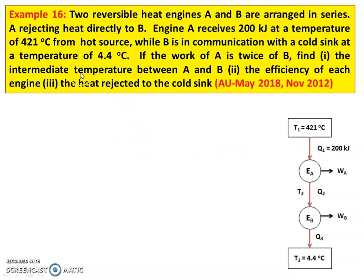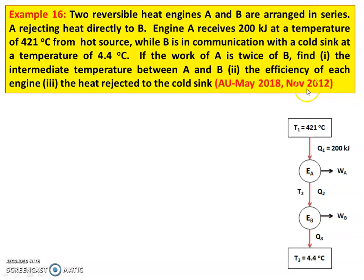Example number 16. Two reversible heat engines A and B are arranged in series. Engine A is rejecting heat to B. Engine A receives 200 kilojoules at a temperature of 421 degree Celsius from the hot source, while B is in communication with the cold sink at a temperature of 4.4 degree Celsius. If the work of A is twice that of B, find: 1. Intermediate temperature between A and B. 2. Efficiency of each engine. 3. Heat rejected by the cold sink. This question is from May 2018 and November 2012.